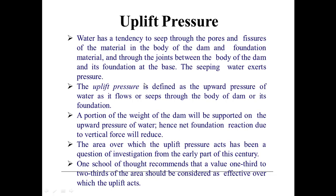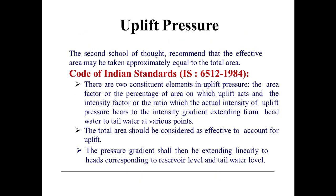One school of thought recommends that one-third to two-thirds of the area should be considered effective over which uplift acts. The second school of thought recommends that the effective area may be taken approximately equal to the total area. According to the Indian codes or Indian standards, there are two constituent elements in uplift: the area factor — the percentage of area on which uplift acts — and the intensity factor — the ratio of the actual intensity of uplift pressure to the intensity gradient from headwater to tailwater at various points. The total area should be considered effective to account for uplift.